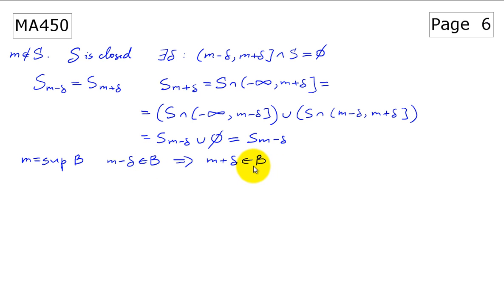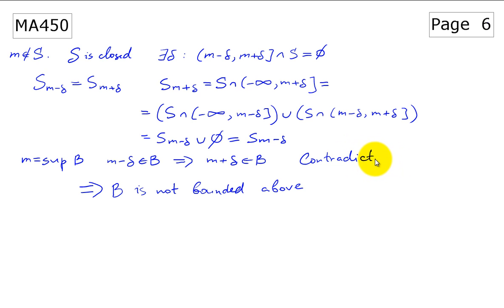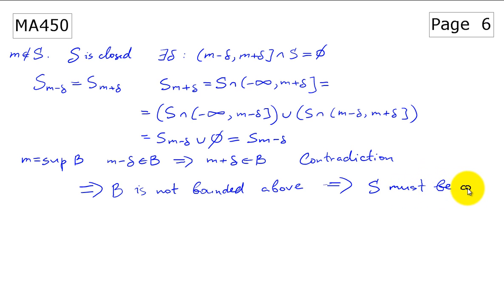Either way — whether M belongs to S or M does not belong to S — if B is bounded above we get a contradiction. Therefore we conclude that B is not bounded above. Since B is not bounded above, the set S must be compact. This concludes the proof.